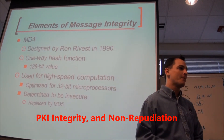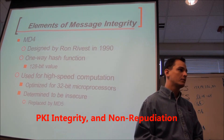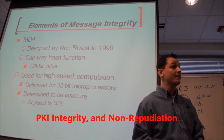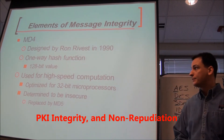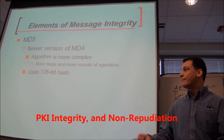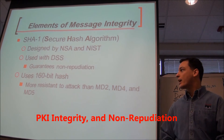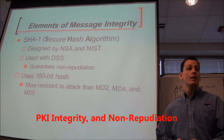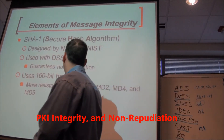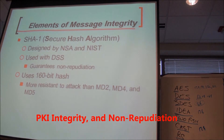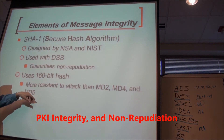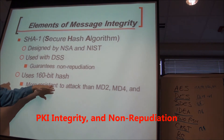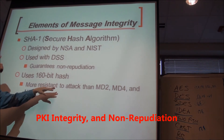They all use 128-bit hashes — they're all the same size — so the only difference between those three MDs is the way they compute the algorithm, which is one-way. MD5 is 128-bit. SHA, used with the Digital Signature Standard, is 160-bit — more guarantees within the DSS, and more resistance to attack. If attacking is based on collisions, SHA would be more resistant to collisions than the previous versions.